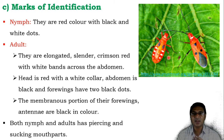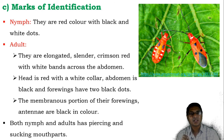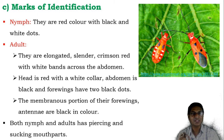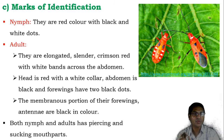In case of the adults, they are elongated, dorsoventrally flattened, and slender — crimson red in color with white bands across the abdomen. The wings are observed and just below the wings, the abdomen has white bands as in the nymphal stage. The head is red in color in both nymphal and adult stages, with a white collar. The abdomen is black and the forewings have two black dots.